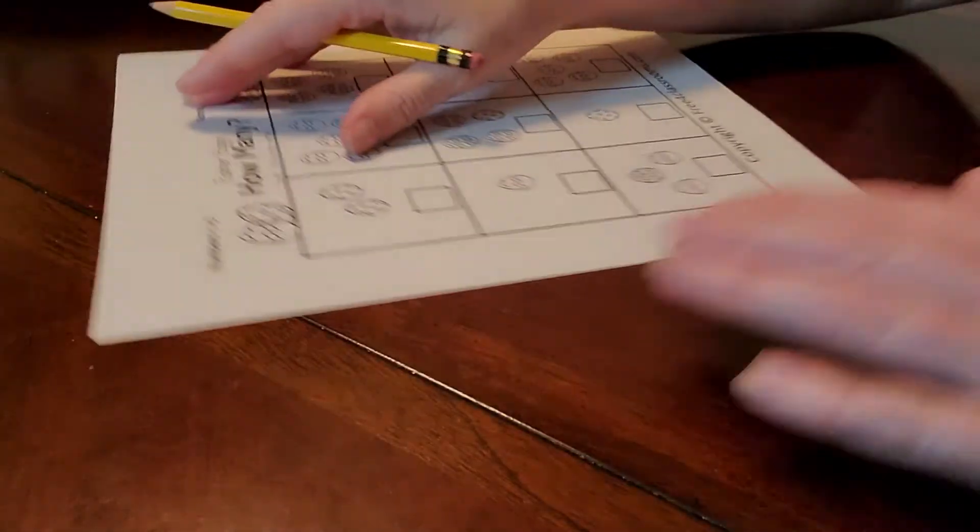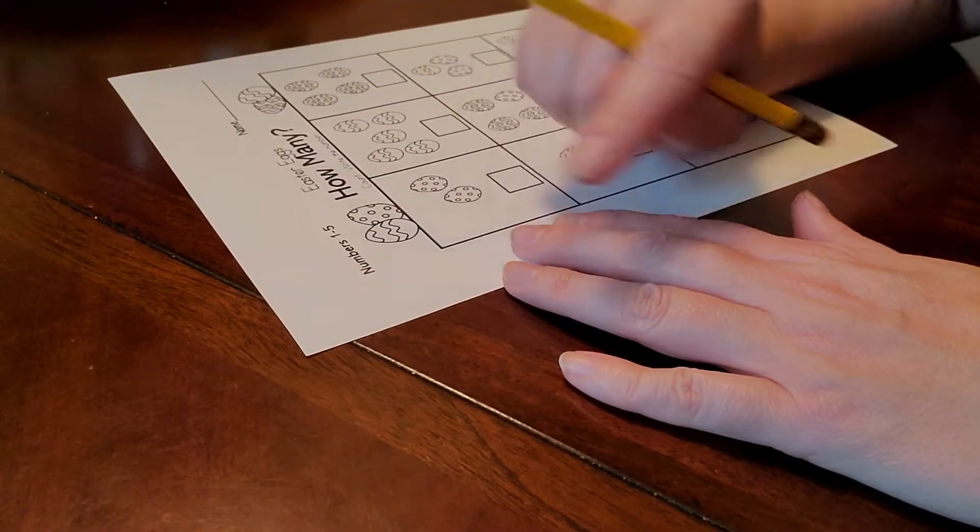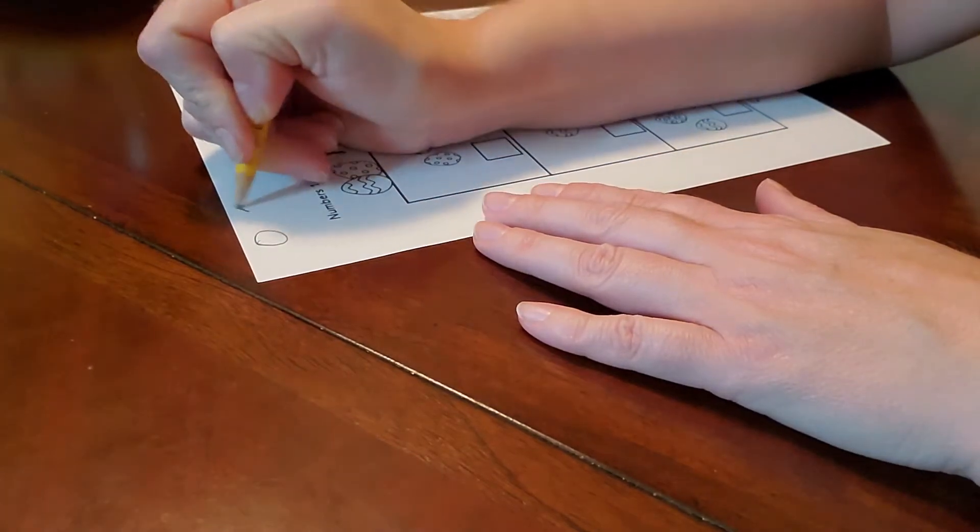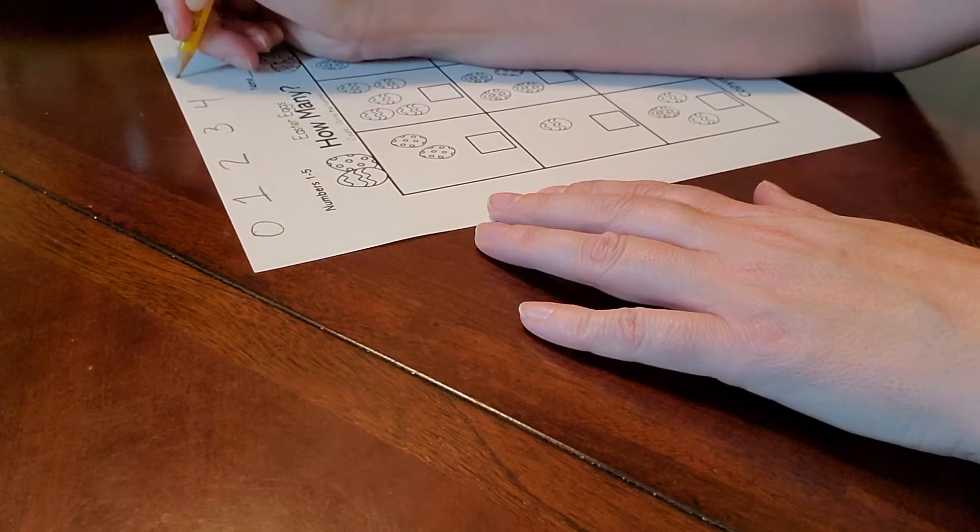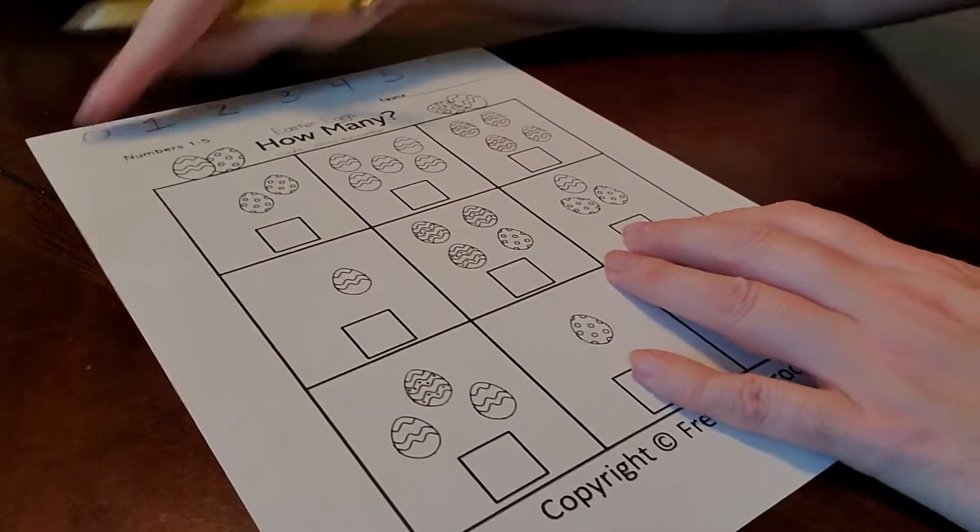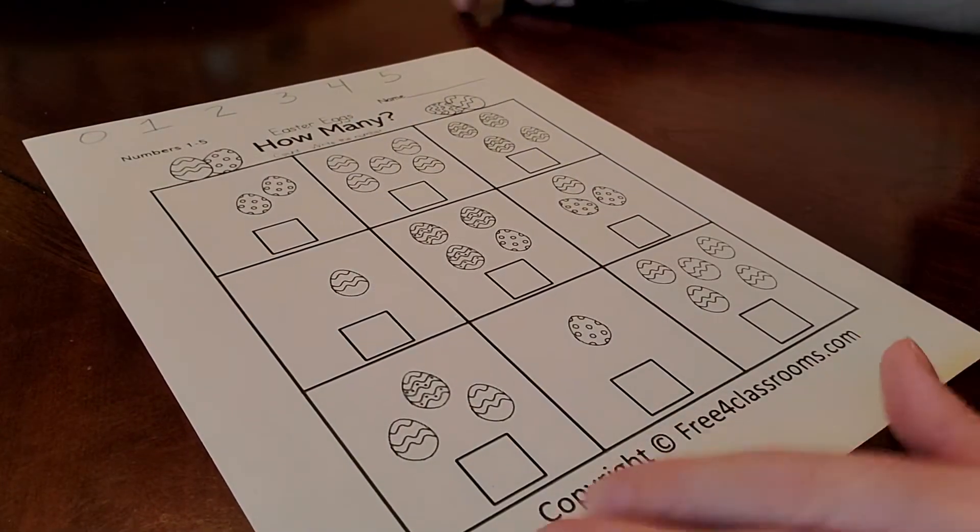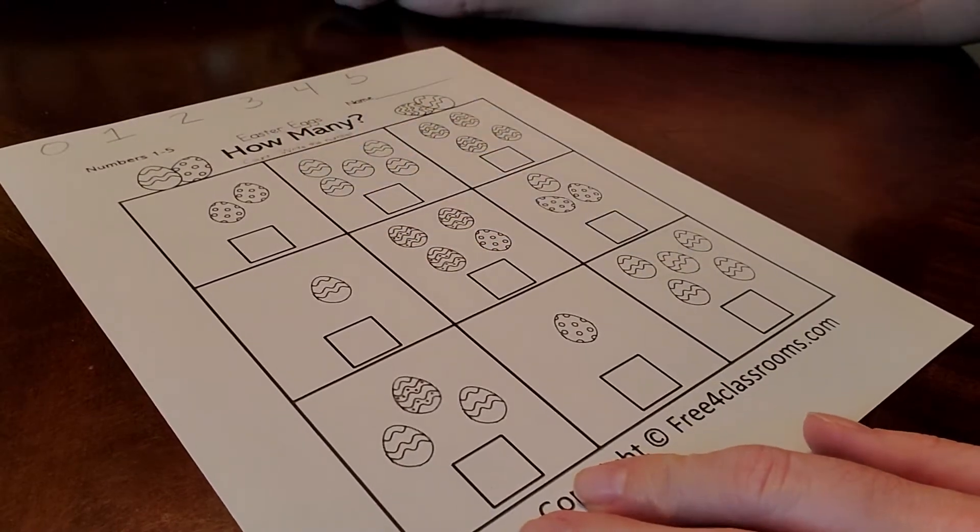So parents, if you will, it says numbers one through five. So write it up here. Zero, one, two, three, four, and five. That way the kids know what it looks like, so they'll know how to write it down here by themselves.